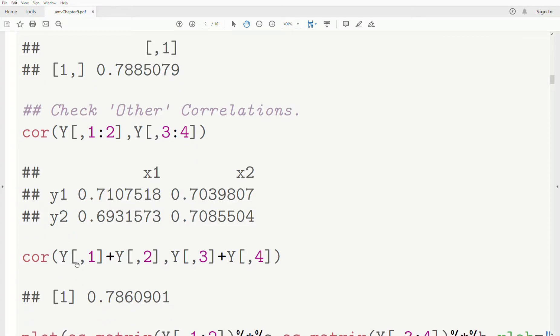Now let's look at the sum of the Ys and the sum of the Xs. Look at that correlation. Well, here it's 0.786, which is big. That's surprisingly big. But it's never going to be as big as this one, 0.7885.